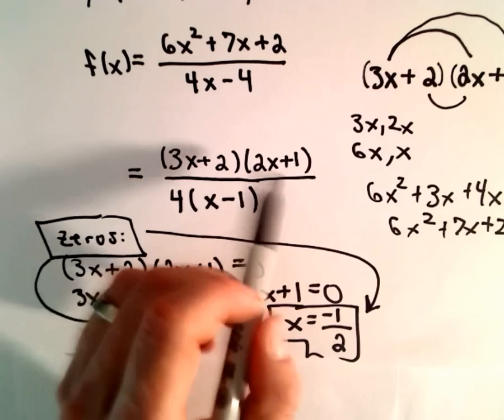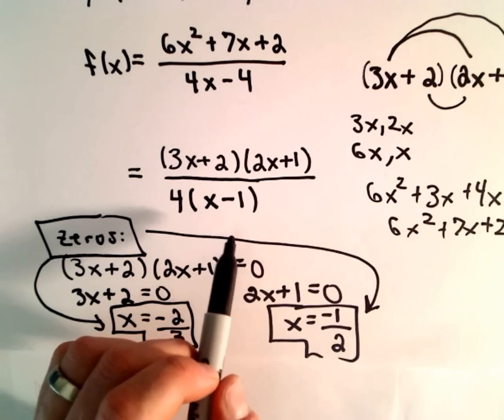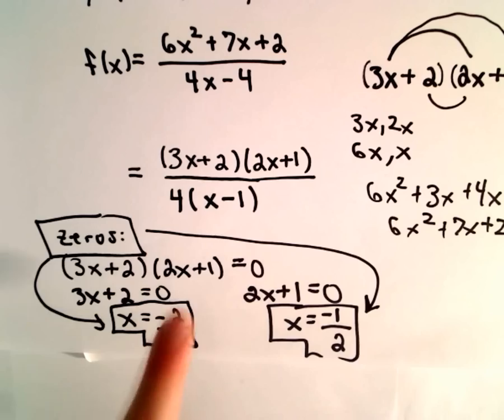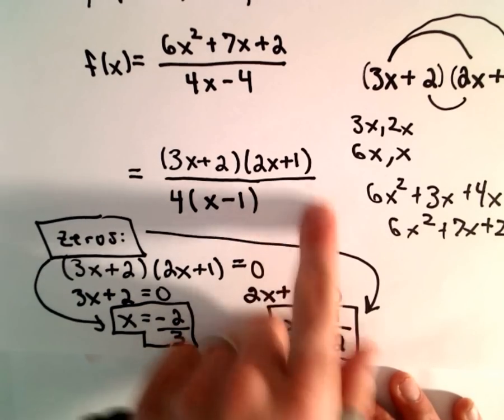Now, you have to be careful. If there had been a common factor, for example, suppose that there was also a 2x + 1 in the denominator.